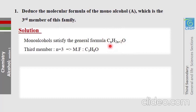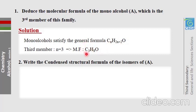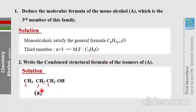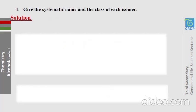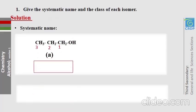Part 2: write the condensed structural formulas of the isomers of C3H8O. The first isomer has 3 carbon atoms with OH on carbon number 1, and the second has OH on carbon number 2. Their names are 1-propanol and 2-propanol respectively.